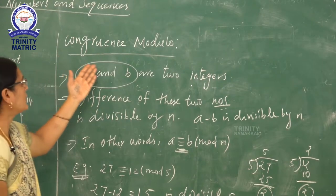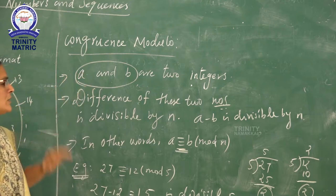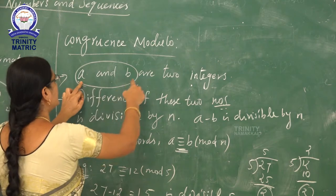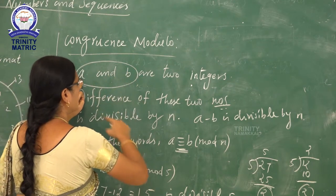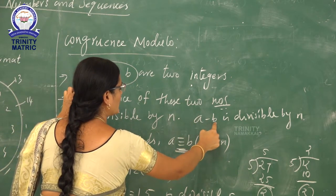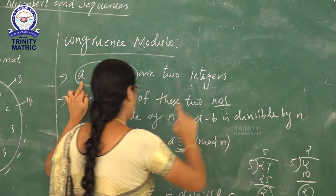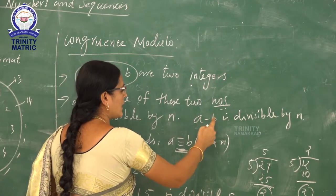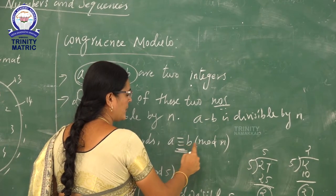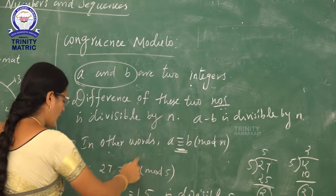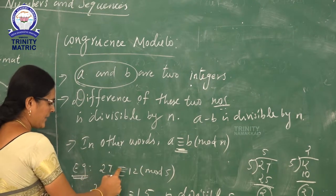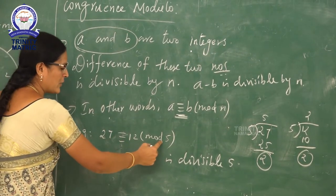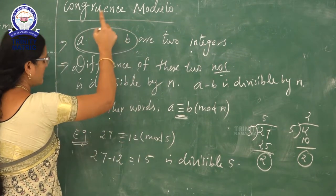Next heading: Congruence Modulo. What is Congruence Modulo? A and B are two integers. The difference of two integers is divisible by n. That is, A minus B is divisible by n. In other words, we write: A congruent B mod n. That is Congruence Modulo.